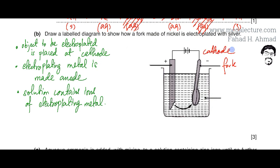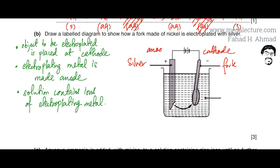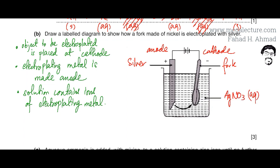The second rule is that the electroplating metal is made the anode. Since we are plating with silver, the silver metal is placed at the anode, connected to the positive terminal of the battery. Third, the solution must contain ions of the electroplating metal — so silver nitrate (aqueous) or any soluble silver salt is used to provide Ag⁺ ions.